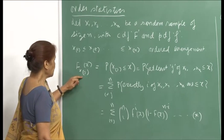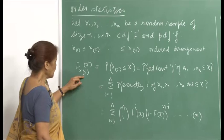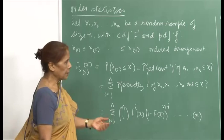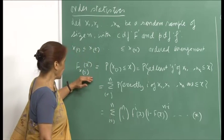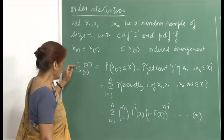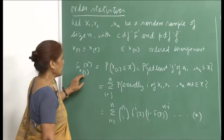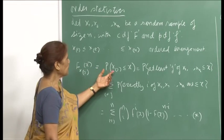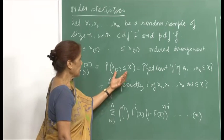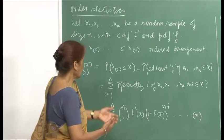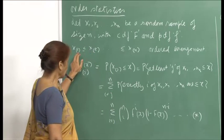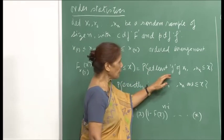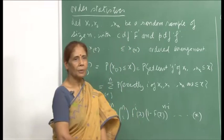Let us begin with the first one. If you want to find the density function, we will start with the CDF, because once we obtain this, we can obtain the PDF also. Here, F_{X_j} is the CDF for the j-th order statistic. So F_{X_j}(x) means the probability of X_j being less than or equal to x.